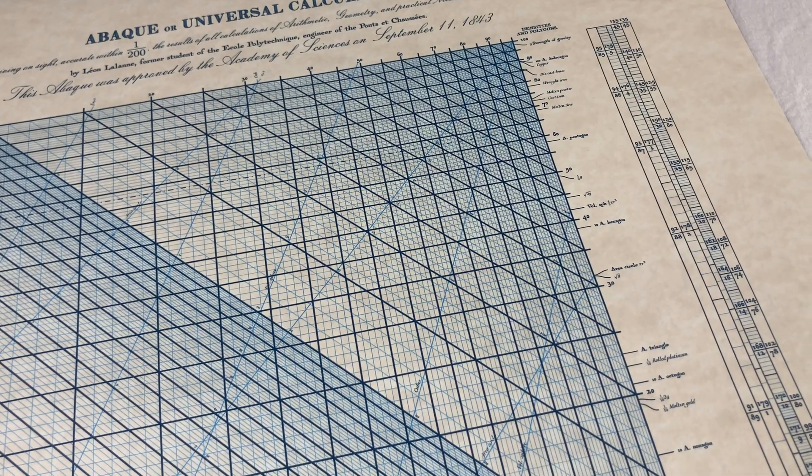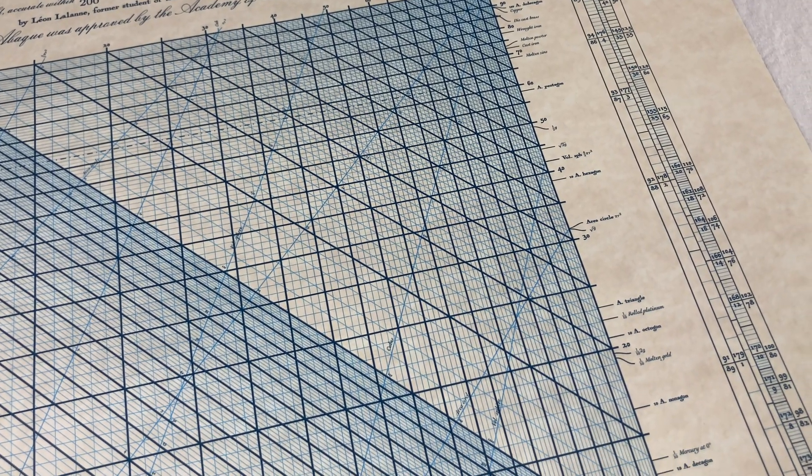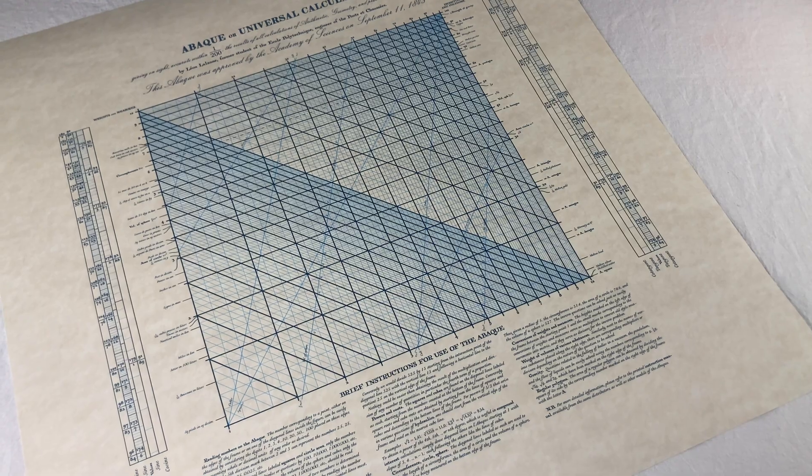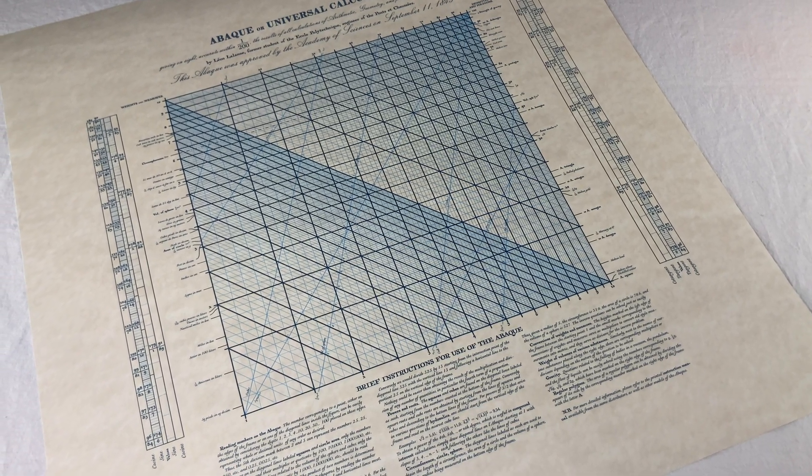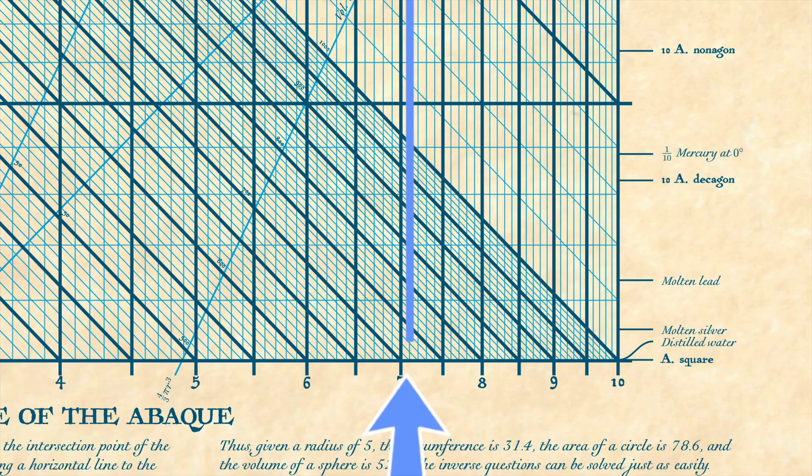How about bigger numbers? Just like on a slide rule, you do the same stuff, but you have to keep track of the decimal places in your head. So for like 34 times 71, I look up 3.4 and 7.1, and I'm getting a value on the diagonal slightly above 24 — let's say 24.2. Putting the decimal point in the right place, this represents an answer of about 2,420. The real answer is 2,414, which is pretty good.